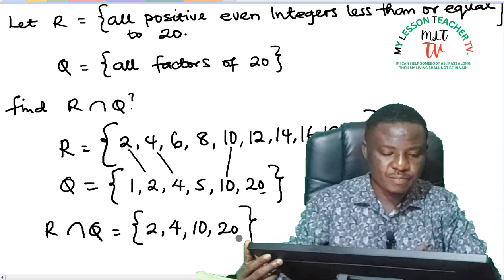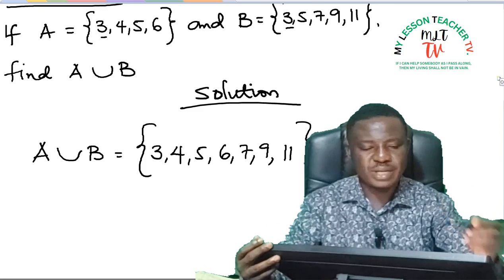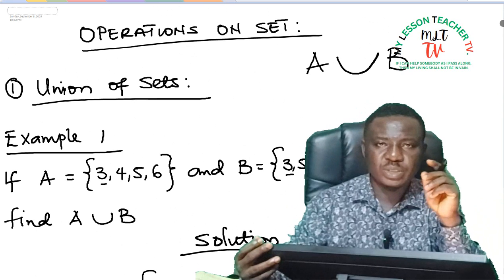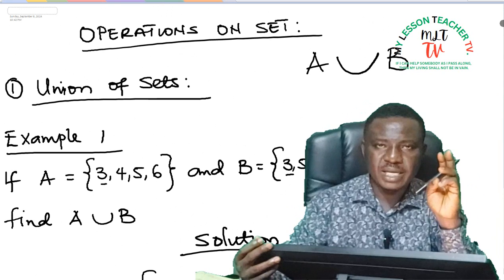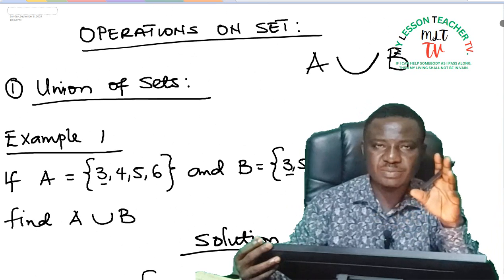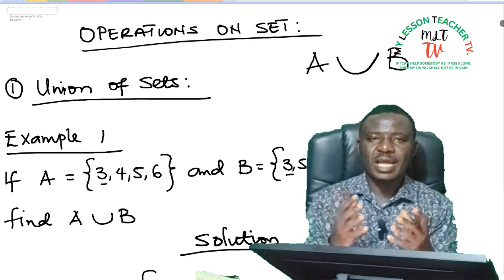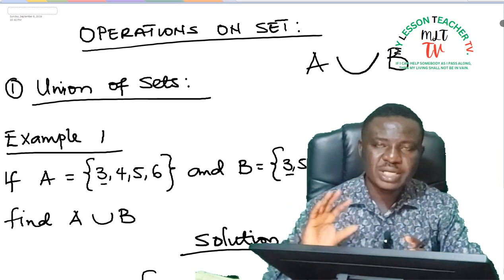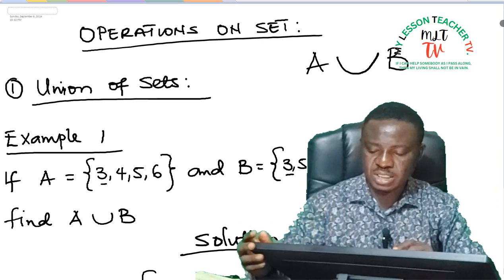That brings us to the end of today's class. In today's class, we have been able to look at the operations on sets which we said are the intersection and the union of two sets. By intersection, we mean those elements you can find in set A and in set B only, while the union of two sets encompasses all the elements you find in A and in B without repetition, irrespective of whether they are common to both or just in a particular set.